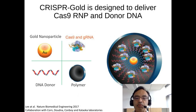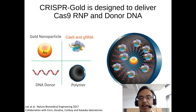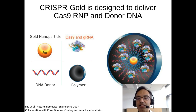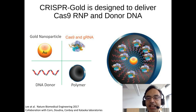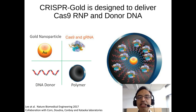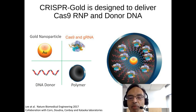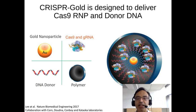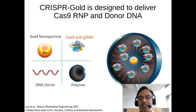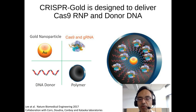To address this problem, our lab developed a delivery vector called CRISPR-GOLD in 2017. CRISPR-GOLD is a nanoparticle technology designed to deliver Cas9 protein, guide RNA, and donor DNA, and correct genes in cells via homology-directed DNA repair. The rationale is that it's a nanoparticle that has all the components needed to do HDR, so that every cell that takes up a CRISPR-GOLD nanoparticle will then undergo HDR efficiently.